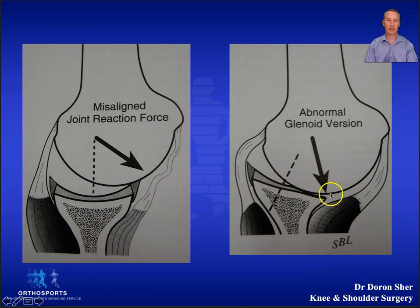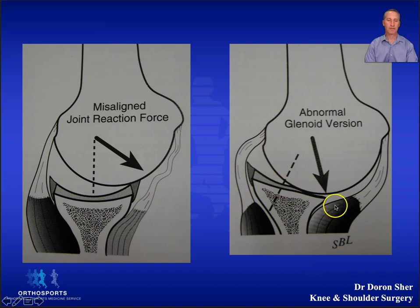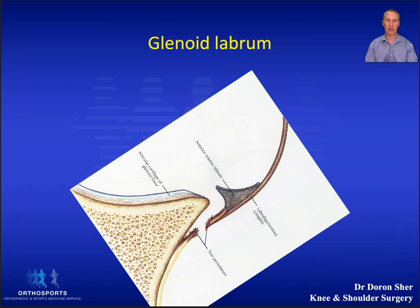Most commonly this will be posterior, and you have decentering of the humeral head away from the center of the glenoid. Unfortunately this will lead to contact loading at the back of the glenoid and does lead to arthritis as the person gets older.